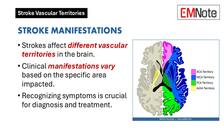It's helpful to think of it like a map. Each artery has its own territory in the brain, and damage to a specific artery produces a predictable set of symptoms.